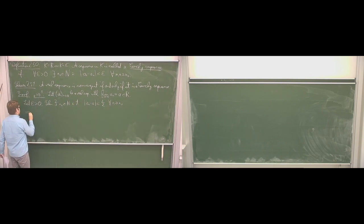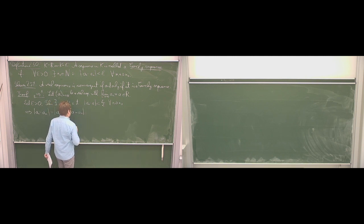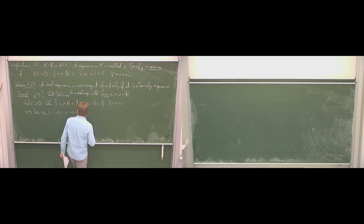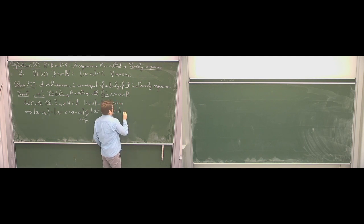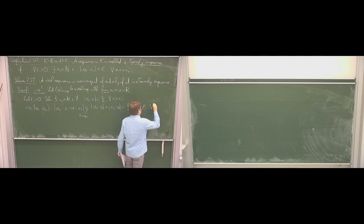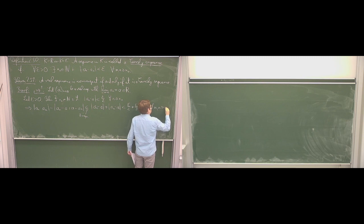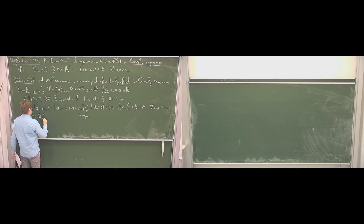Then, if M and N are both bigger than N₀, we can take the difference a_N minus a_M in absolute value, subtract A and add A inside, and use the triangle inequality. The triangle inequality says this is smaller than or equal to |a_N − A| plus |a_M − A|. Both are smaller than epsilon over 2, giving epsilon for all M and N bigger than or equal to N₀. This shows that a_N is a Cauchy sequence.